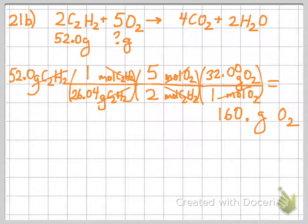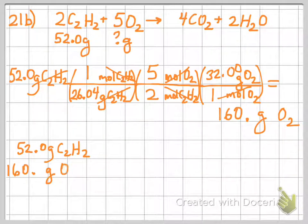That answers that question. Letter C says, use the answers from A and B to show that this equation obeys the law of conservation of mass. So we know for our reactants that we have 52 grams of acetylene. We just figured out that we have 160 grams of oxygen. So we're going to add these two together and figure out that we have 212 grams of our reactants.